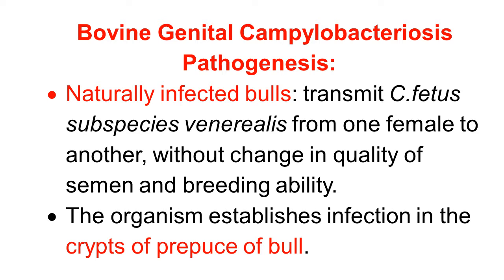Here we discuss the pathogenesis of bovine genital campylobacteriosis and the different types of reproductive losses this disease causes. The naturally infected bull transmits Campylobacter fetus fetus or Campylobacter fetus subspecies venerealis from one female to another. If one female is infected, it will spread the infection to other females via the bull. So the bull is the transmitter, but there will be no change in the semen quality or breeding behavior of the bull, so it is not much harmful to the bull.